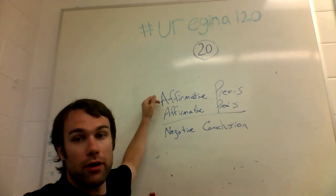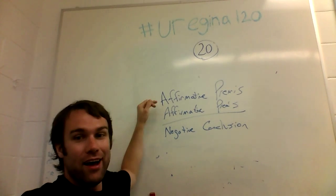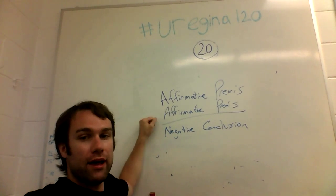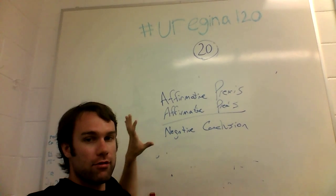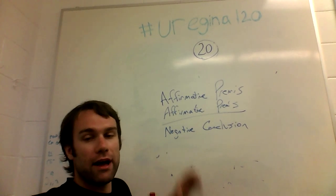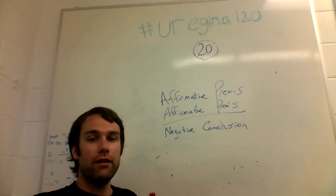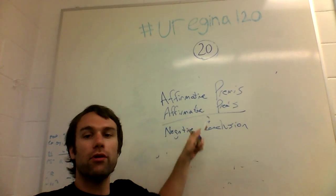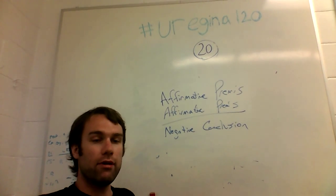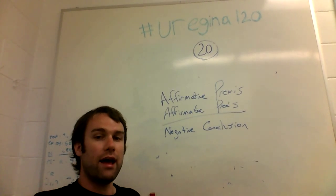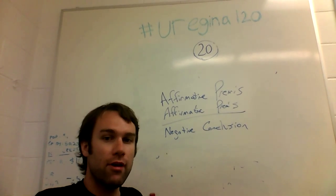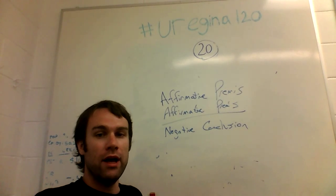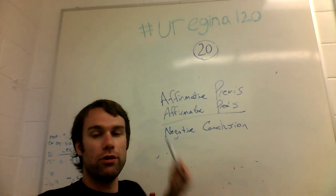Our logical fallacy today is of the form where you have an affirmative premise, another affirmative premise, and a negative conclusion. Note that there's a negative conclusion, so there has to be a negative premise — but if you look, there are no negative premises. So this is an invalid argument. A logical fallacy is usually an invalid argument or something very close to it, where you can boil down your argument into this form and notice that it is not valid.